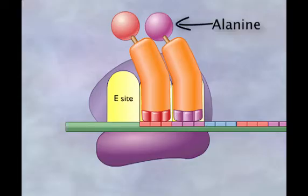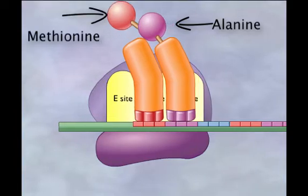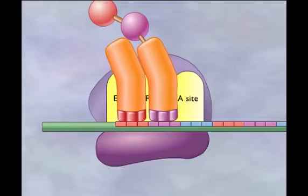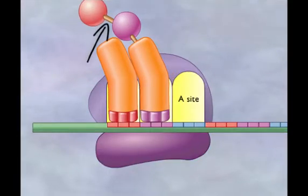An enzyme in the large subunit of the ribosome transfers the methionine from the initiator transfer RNA to the alanine bound to the second transfer RNA. A peptide bond forms between these two amino acids forming a dipeptide.